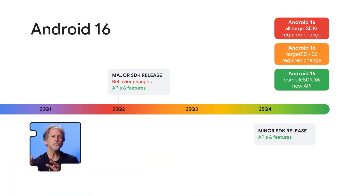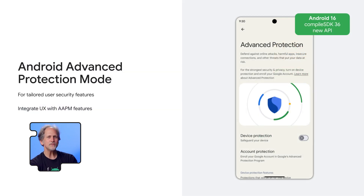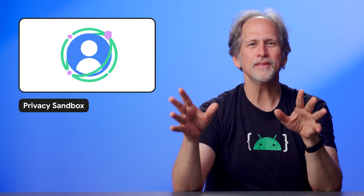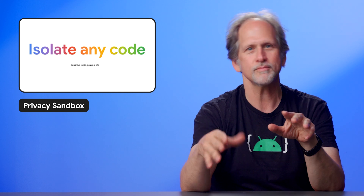Android joined in all the I/O fun as well. With Android's new release cadence, instead of talking about the Android 16 beta, we're already close to the release of Android 16, with the first ever minor API release of Android planned for later this year. Android announced new privacy and security features, including the Android Advanced Protection Mode API and Theft Protection with Identity Check. Credential Manager adds the Digital Credentials API for ID verification, and users can restore their credentials during device onboarding with the new Restore Credentials API. The Privacy Sandbox allows you to use third-party code in a dedicated SDK runtime process separate from your app.